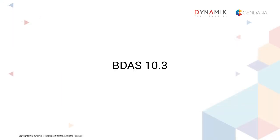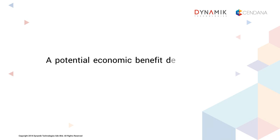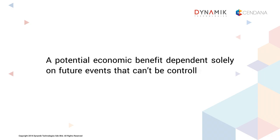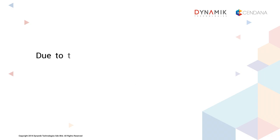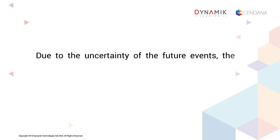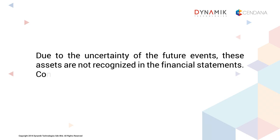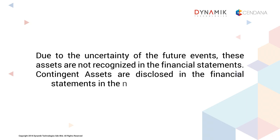Moving on to B-10.3 is to record contingent assets. It is defined as a potential economic benefit dependent solely on future events that can't be controlled by the company. However, due to the uncertainty of future events, these assets are not recognized in the financial statements. Contingent assets are disclosed in the notes to the financial statements and are not reported in the statements themselves.